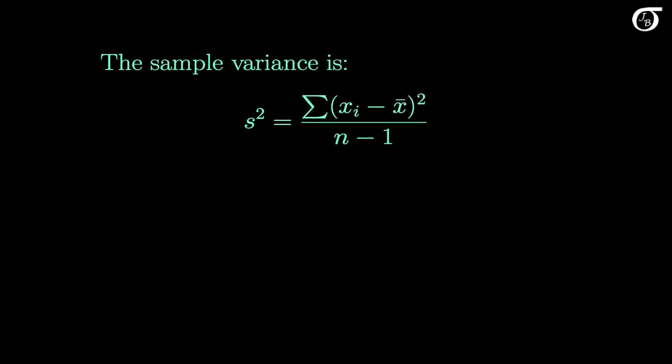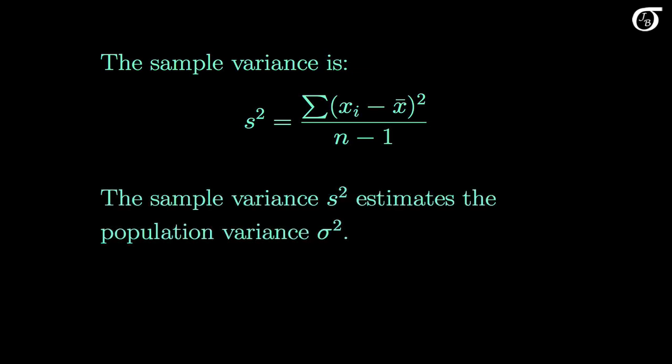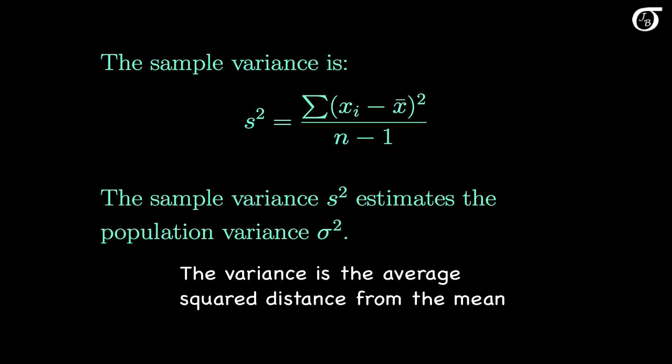The sample variance s² is the sum of squared deviations divided by n−1. We use s² to estimate the population variance σ². Dividing by n−1, rather than n, results in a better estimator of σ². We can think of the variance as the average squared distance from the mean. The units of the variance are the square of the units of the variable — so if measurements are in meters, variance has units of meters squared. To get back to the original units, we take the square root of the variance.